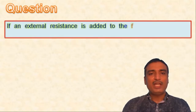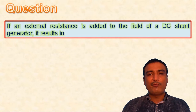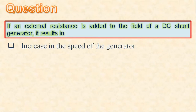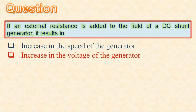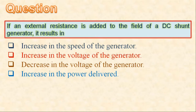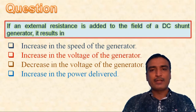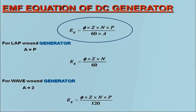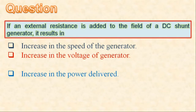Next question: if an external resistance is added to the field of a DC shunt generator, it results in — increase in speed, increase in voltage, decrease in voltage, or increase in power delivered. Adding external resistance to the field winding decreases the field current, which reduces the field flux. From the EMF equation of the DC generator, reduced field flux results in a decrease in voltage. So the third option is correct.